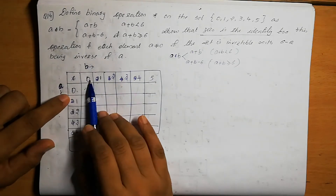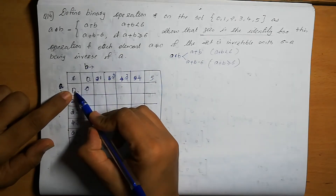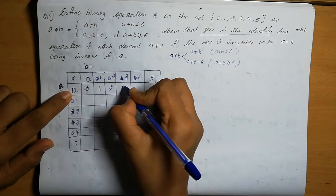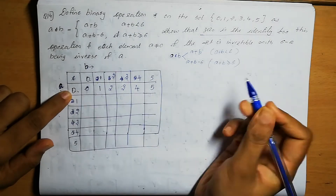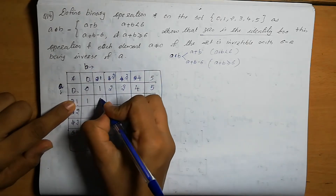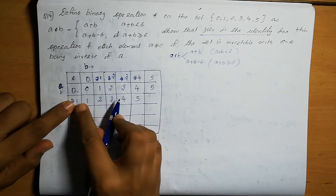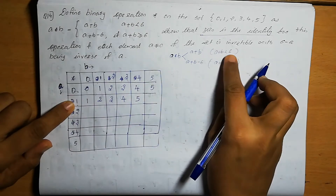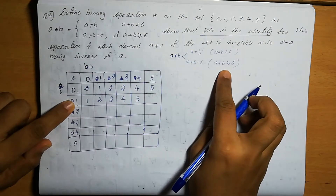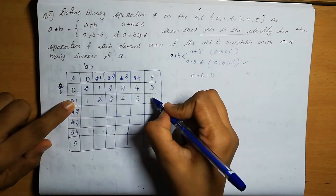Row 1: 1+0=1, 1+1=2, 1+2=3, 1+3=4, 1+4=5 — all less than 6. For 1+5=6, which is greater than or equal to 6, so we write 6 minus 6 equals 0. Row 2: 2+0=2, 2+1=3, 2+2=4, 2+3=5. For 2+4=6, we write 6 minus 6 equals 0. For 2+5=7, we write 7 minus 6 equals 1.